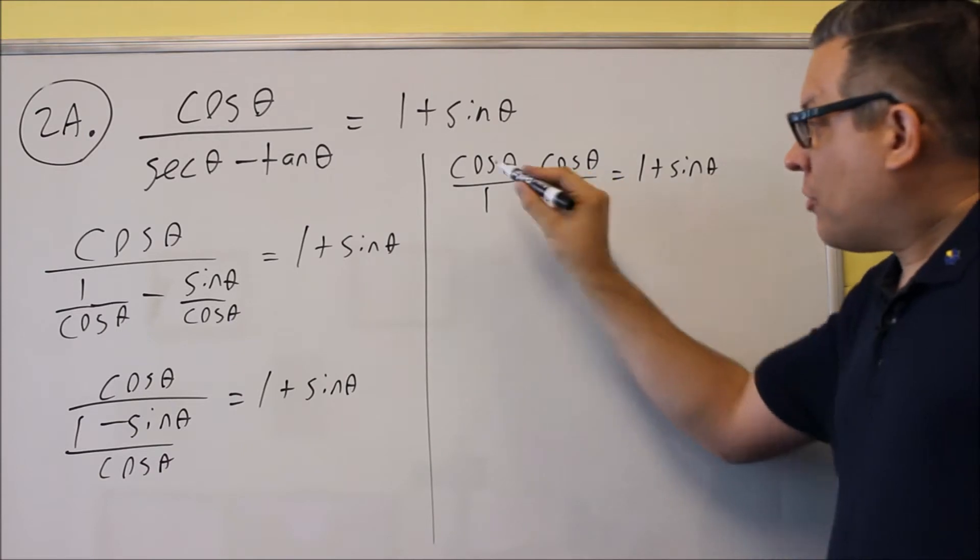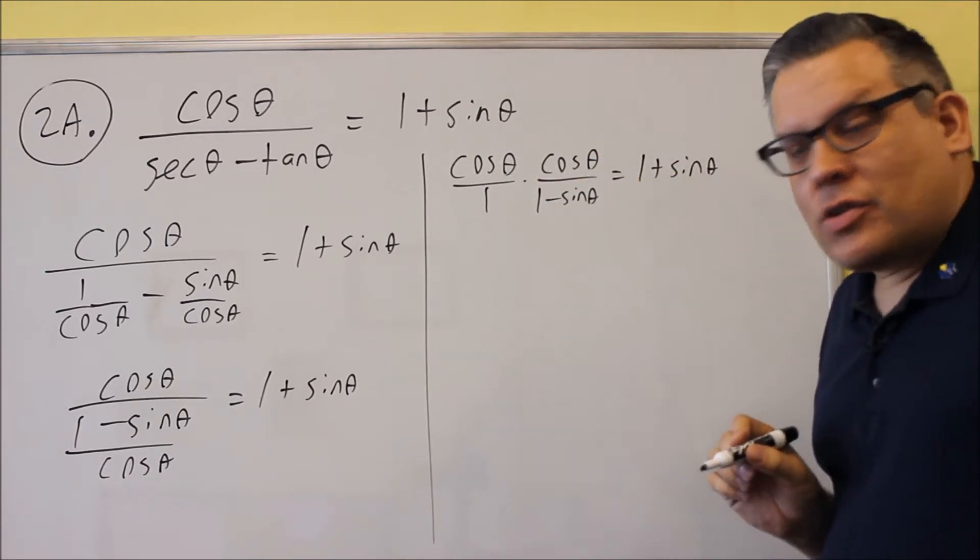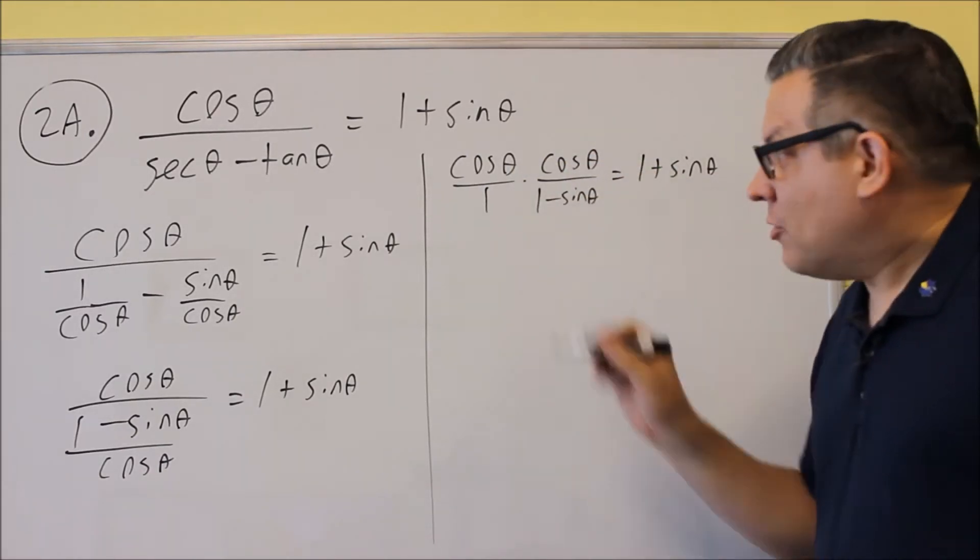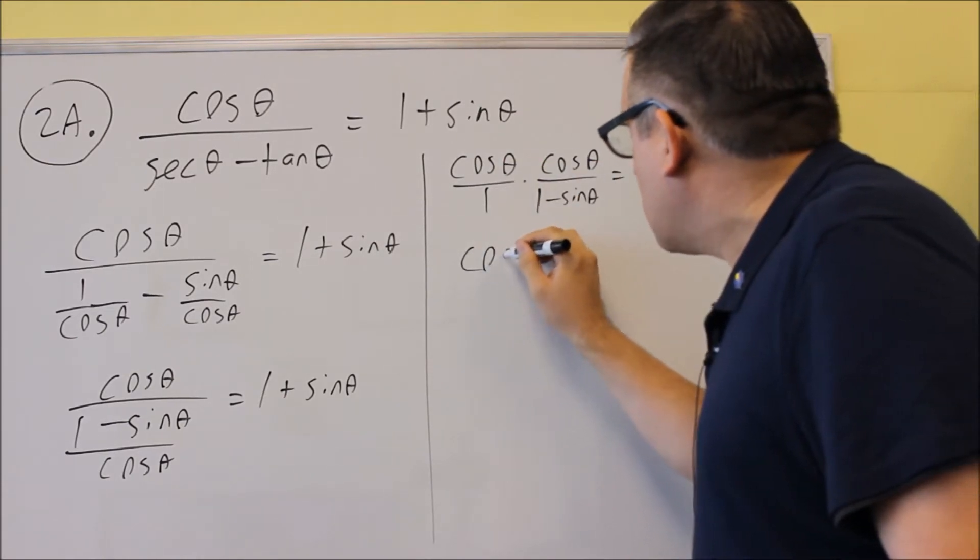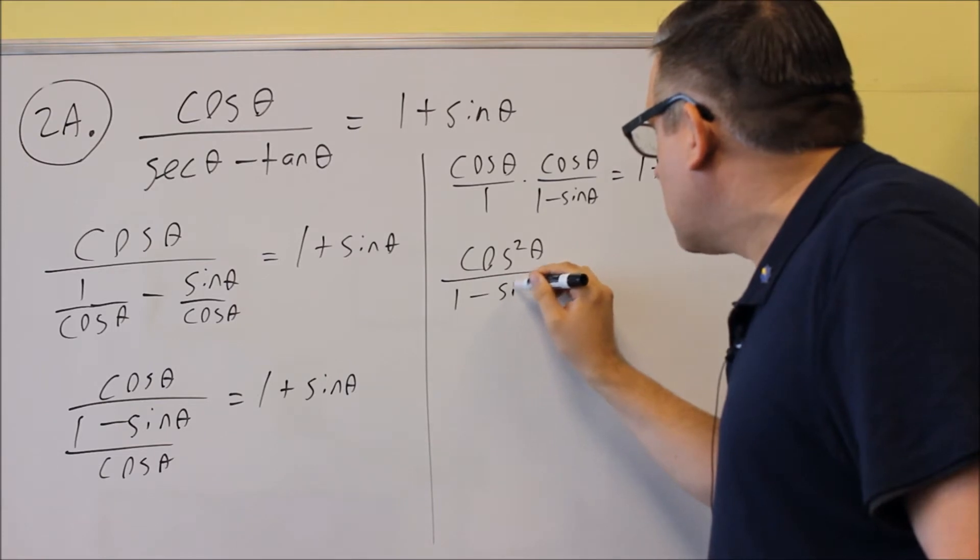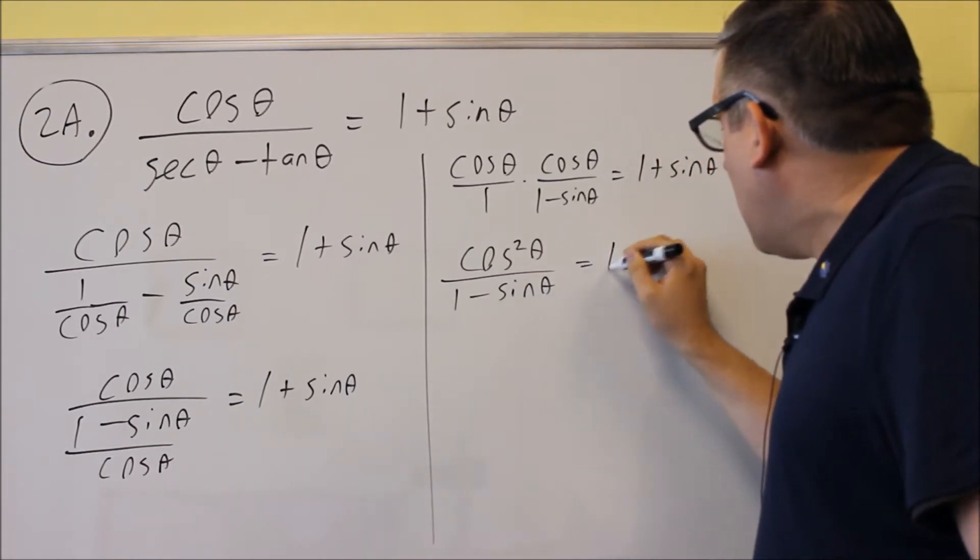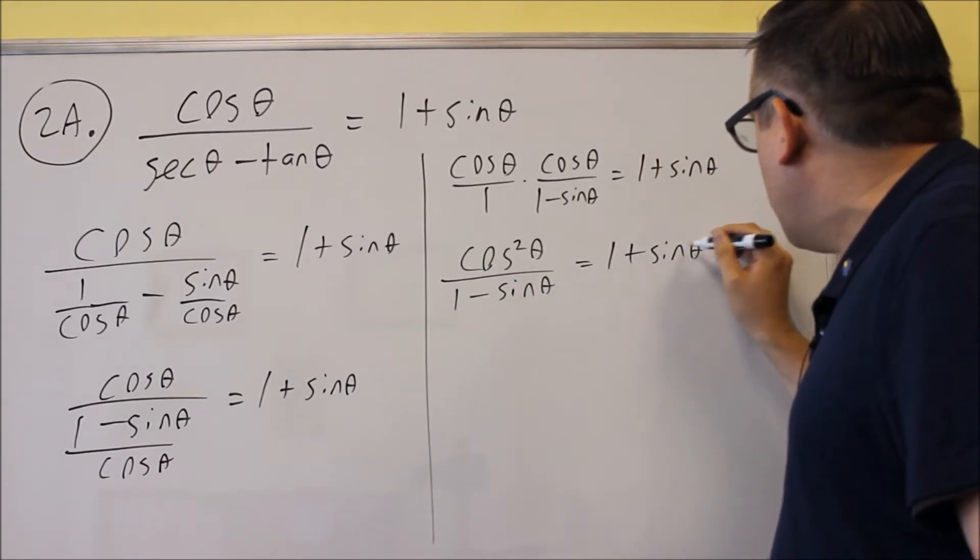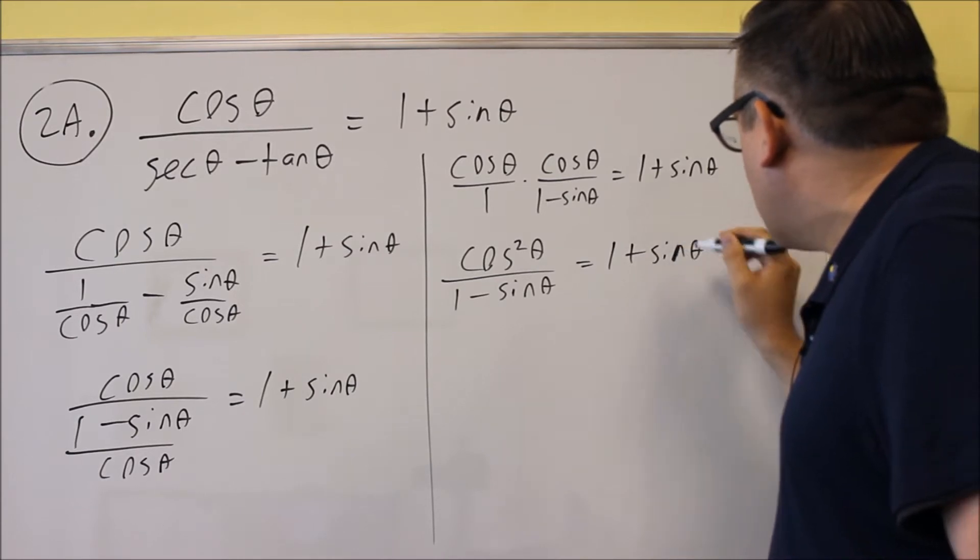Doing this, we're going to multiply it across the top, across the bottom. So if you're multiplying fractions, you don't need common denominators. So we're just going to multiply it across. We get cosine squared. And across the bottom, we get one minus sine theta. And we want to show that it equals one plus sine theta here.